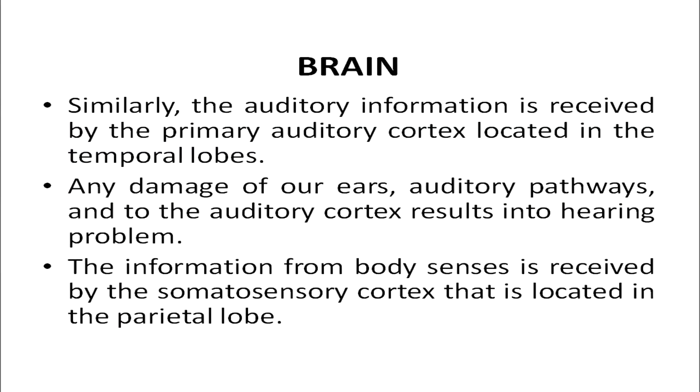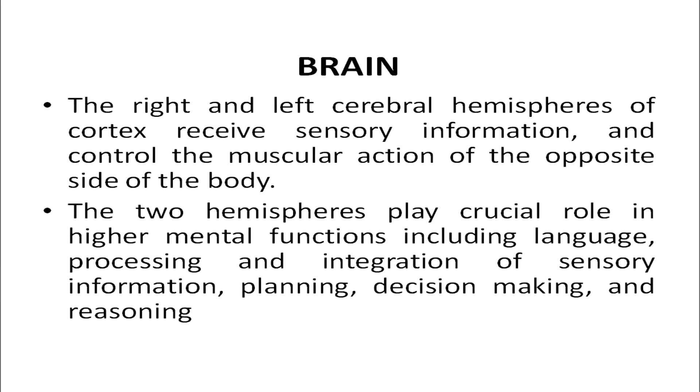The auditory information is received by the primary auditory cortex, located in the temporal lobe. Any damage to the ears, auditory pathways, or auditory cortex results in hearing problems. The information from body senses is received by the somatosensory cortex, located in the parietal lobe. So visual information is processed in the occipital lobe, auditory information in the temporal lobe, and sensory body information in the somatosensory cortex of the parietal lobe.